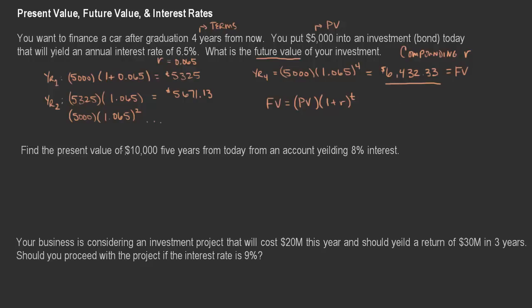The second example asks us to find the present value — working backwards. We want $10,000 five years from today from an account yielding an interest rate of 8%, so R = 0.08, and the term is five years. Rearranging the future value formula and solving for present value: present value equals future value divided by (1 plus the interest rate) raised to the number of years.